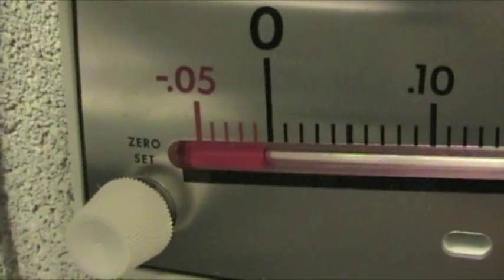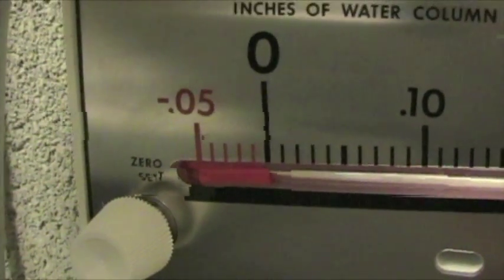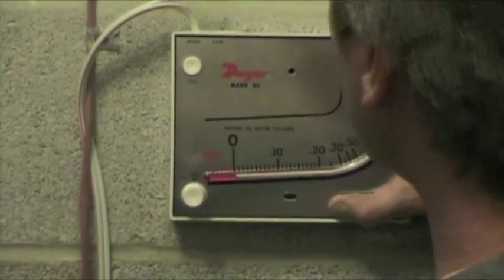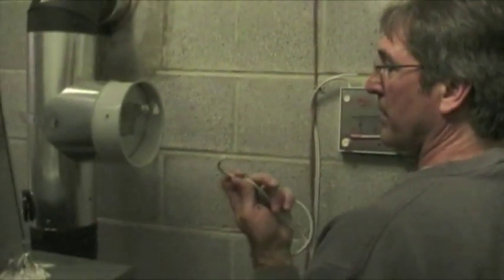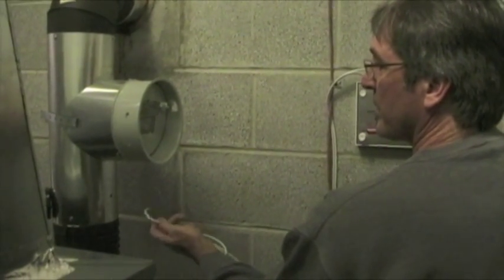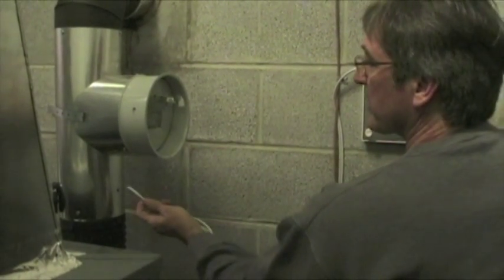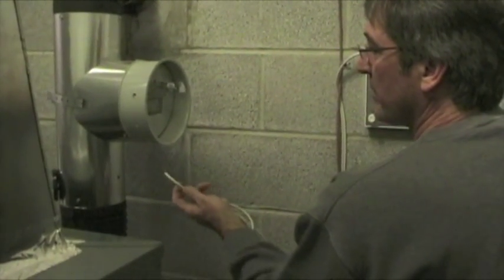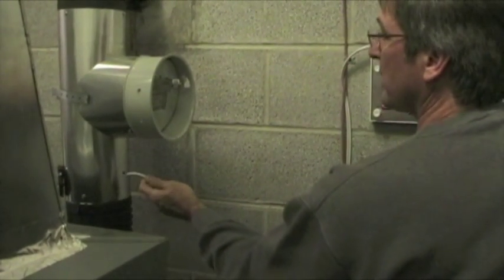I'm gonna put the tubing into the draft and see what we get. Meniscus is on zero. I'm gonna insert the rubber tubing into the flue proximal to the barometric draft regulator, between the BDR and the furnace, and measure the pressure.